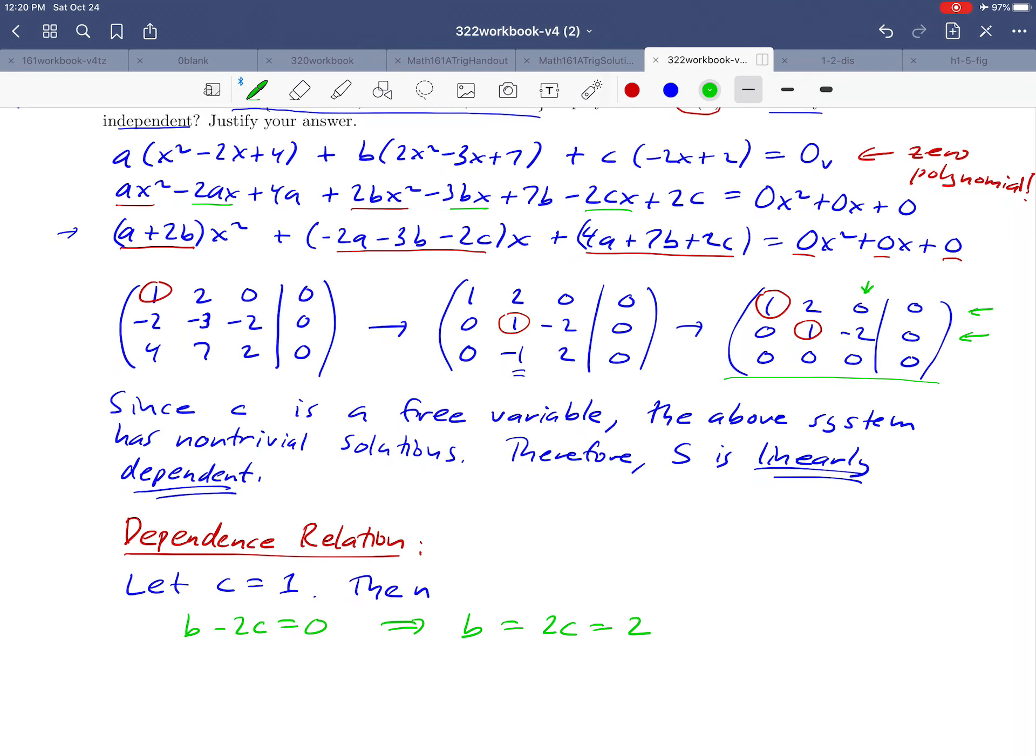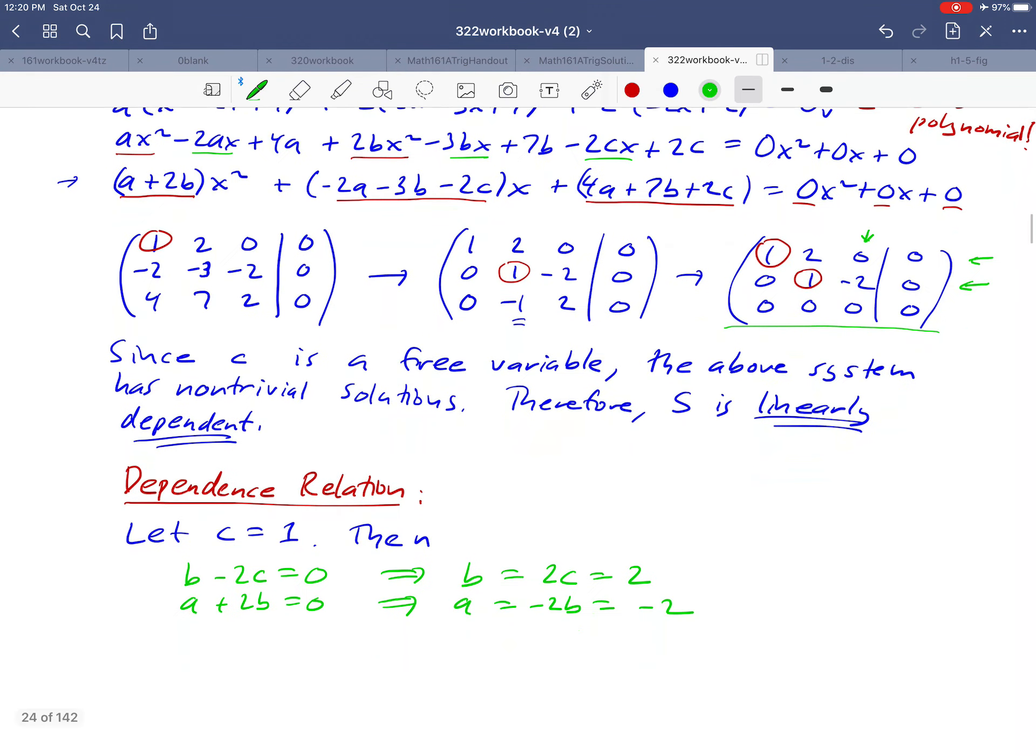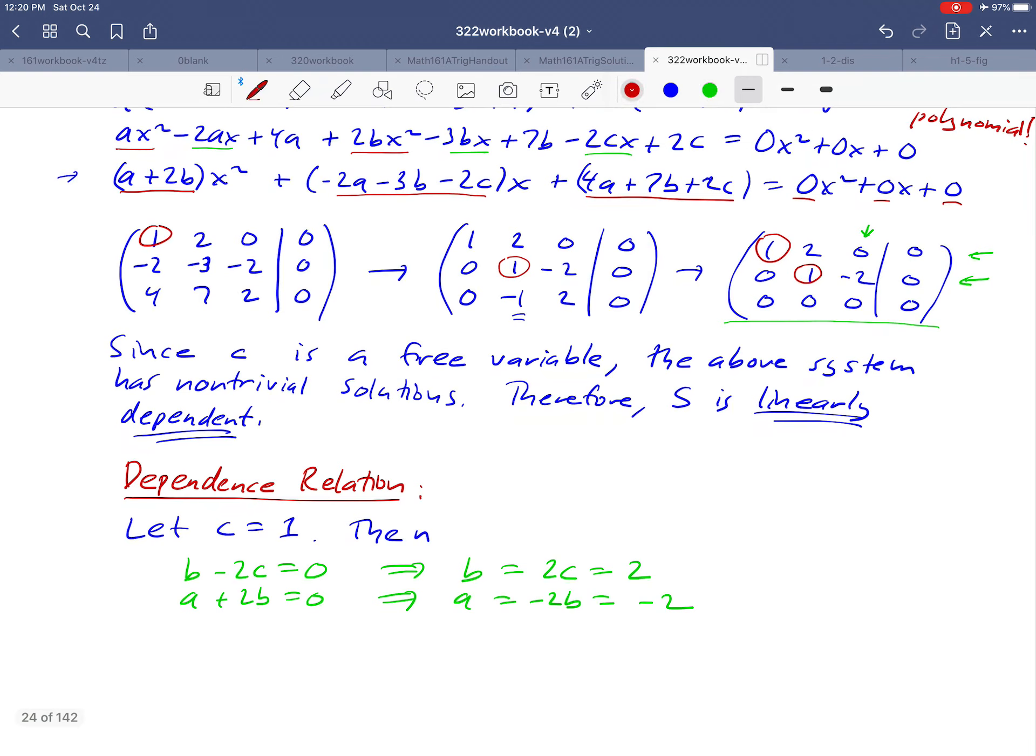And then going up to the first equation, that if we read it off, looks like a plus 2b equals zero. So a is negative 2b, which is negative 2. All right, so what we've come up with then is a value for a, b, and c, these three numbers.